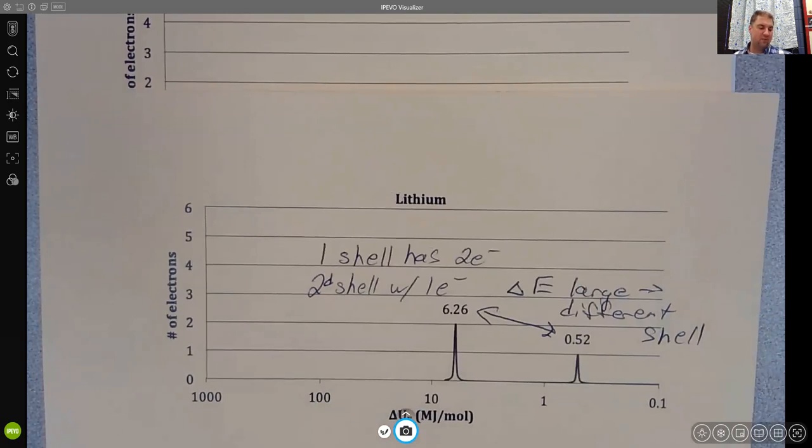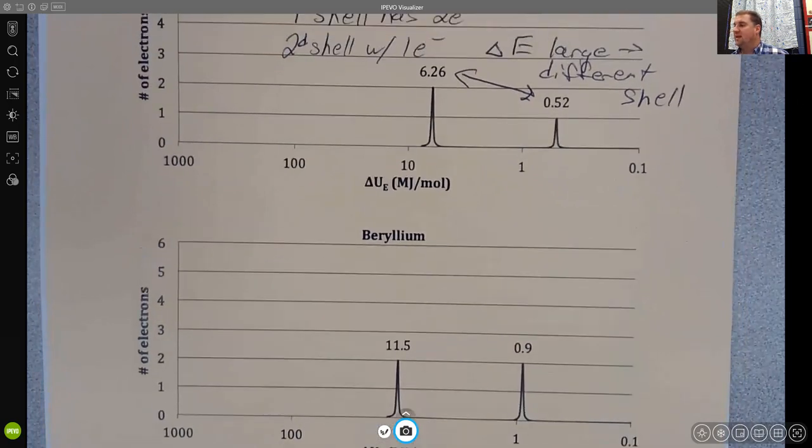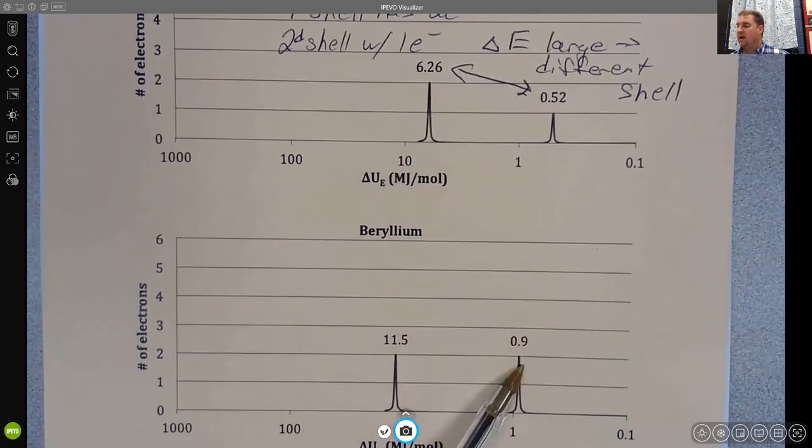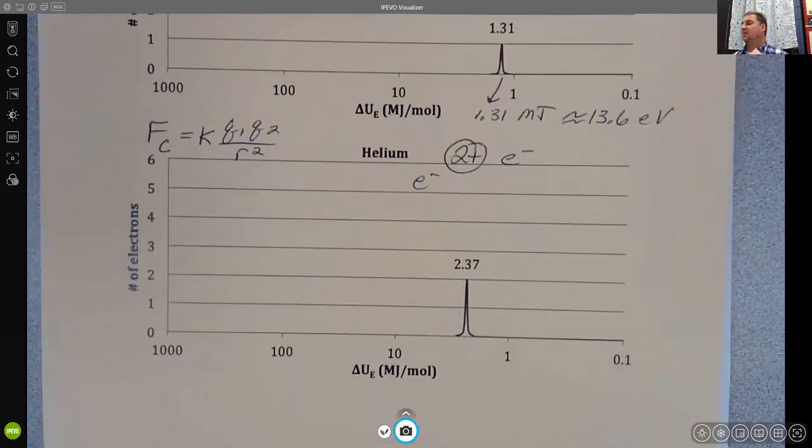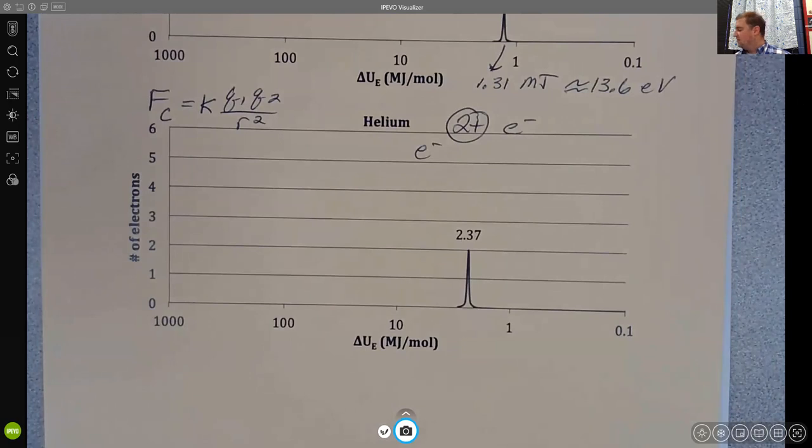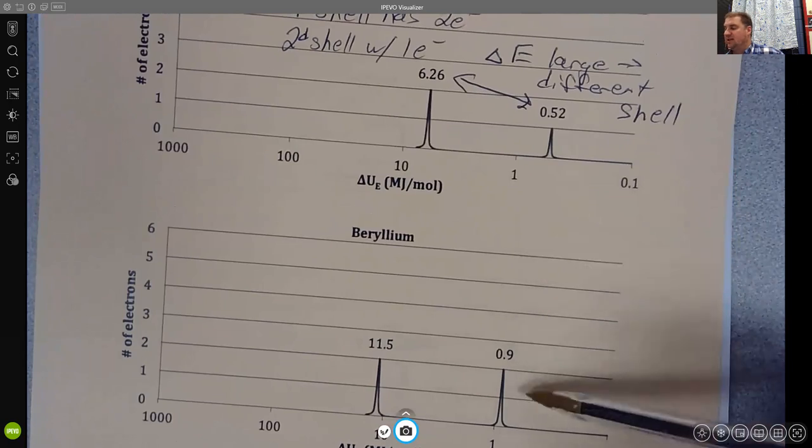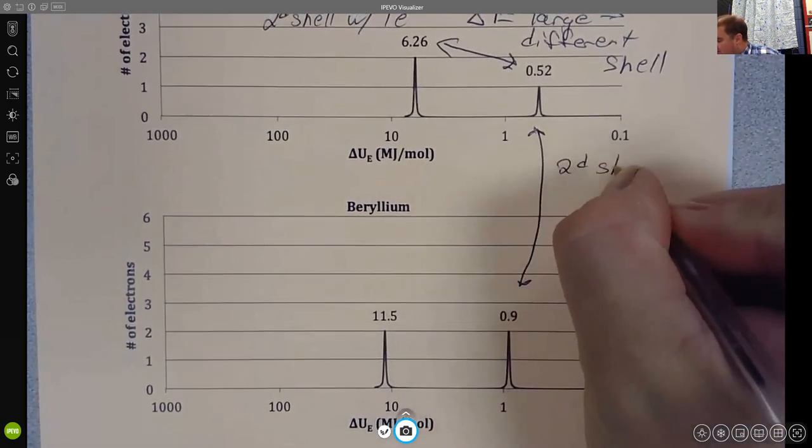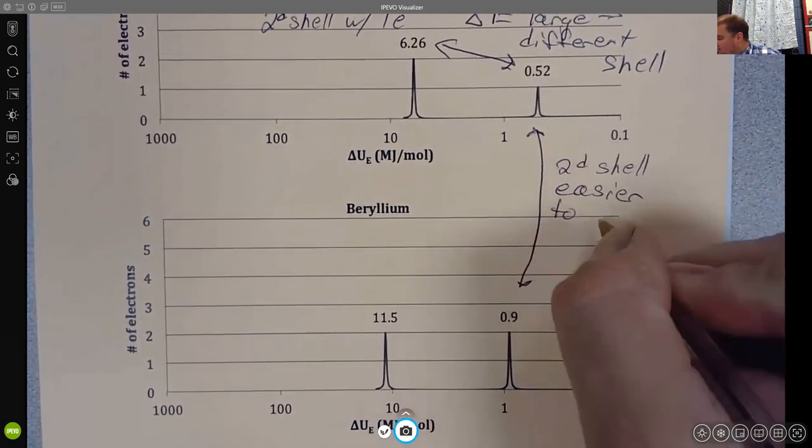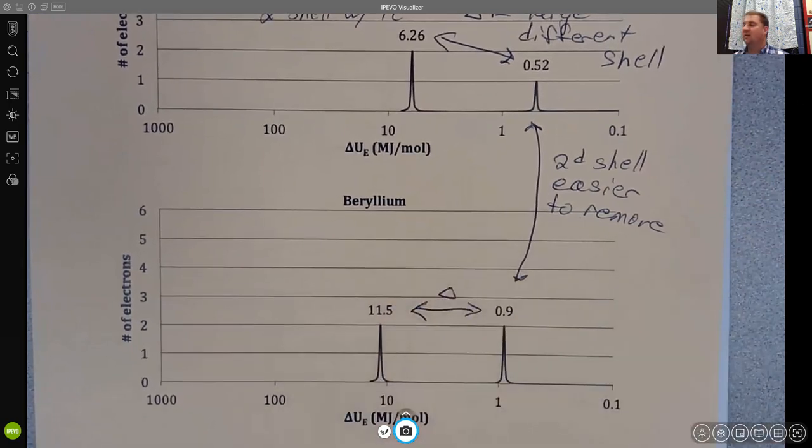If we continue along and look at beryllium, we see that the second peak increases. We also see that the energy to ionize these electrons goes down, and we could compare those energies back to the energies from helium and hydrogen. The helium and hydrogen energies went from about one and about two to about six and eleven for beryllium. But there's this other peak here now that's actually less than one. These electrons in the second shell are easier to remove than the electrons in the first shell, but we still see a large difference in energy, which tells us that these are in different shells for where the electrons exist in the atom.